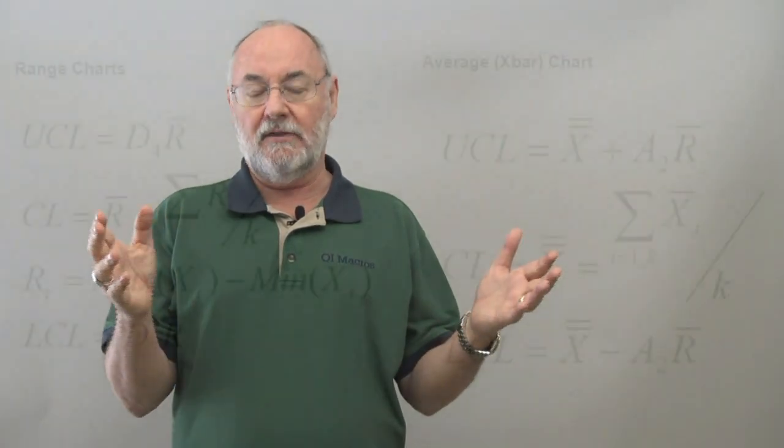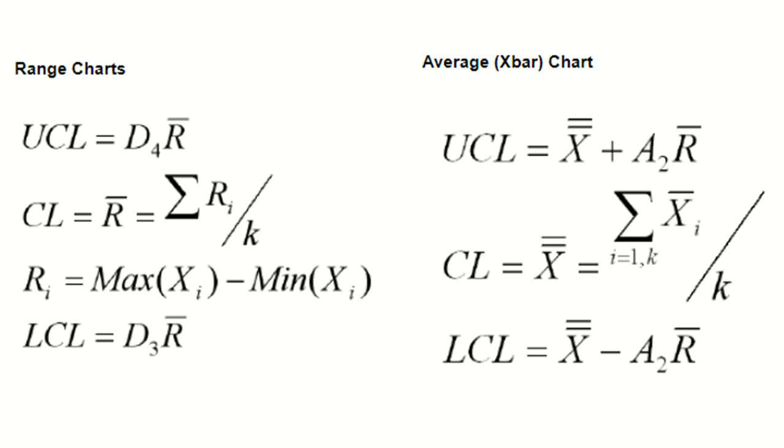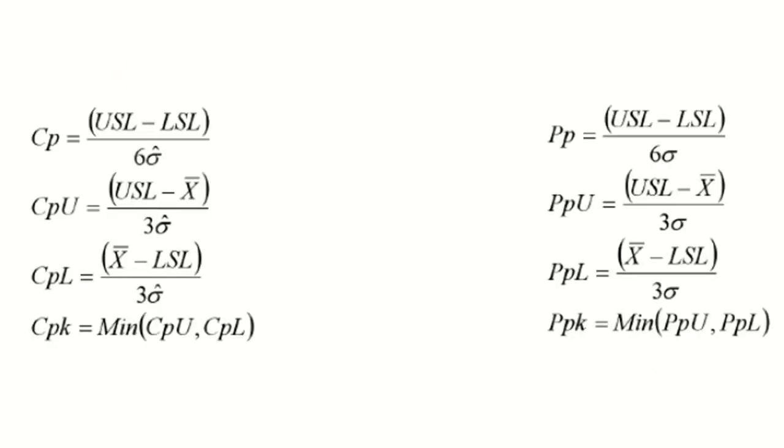I want to talk to you about one of my concerns, which is in a lot of Six Sigma trainings, we spend a lot of time teaching people formulas for control charts or whatever, CP and CPK. And why are we doing that?